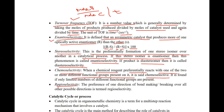Regioselectivity is the preference of one direction of bond making or breaking over all other possible directions. If a bond is making or breaking in one particular direction, that is called regioselectivity.